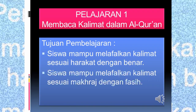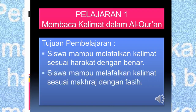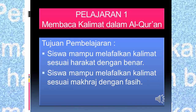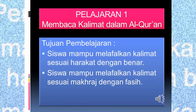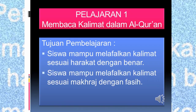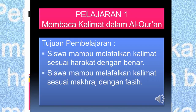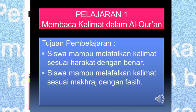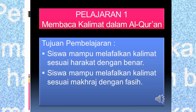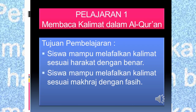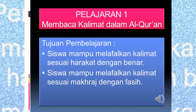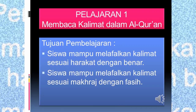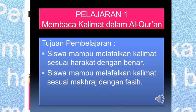Baik anak-anak, pada pelajaran satu tentang membaca kalimat dalam Al-Quran ini, bertujuan agar siswa mampu melafalkan kalimat sesuai harokat dengan benar. Kemudian yang kedua, siswa mampu melafalkan kalimat sesuai makhraj dengan fasih.